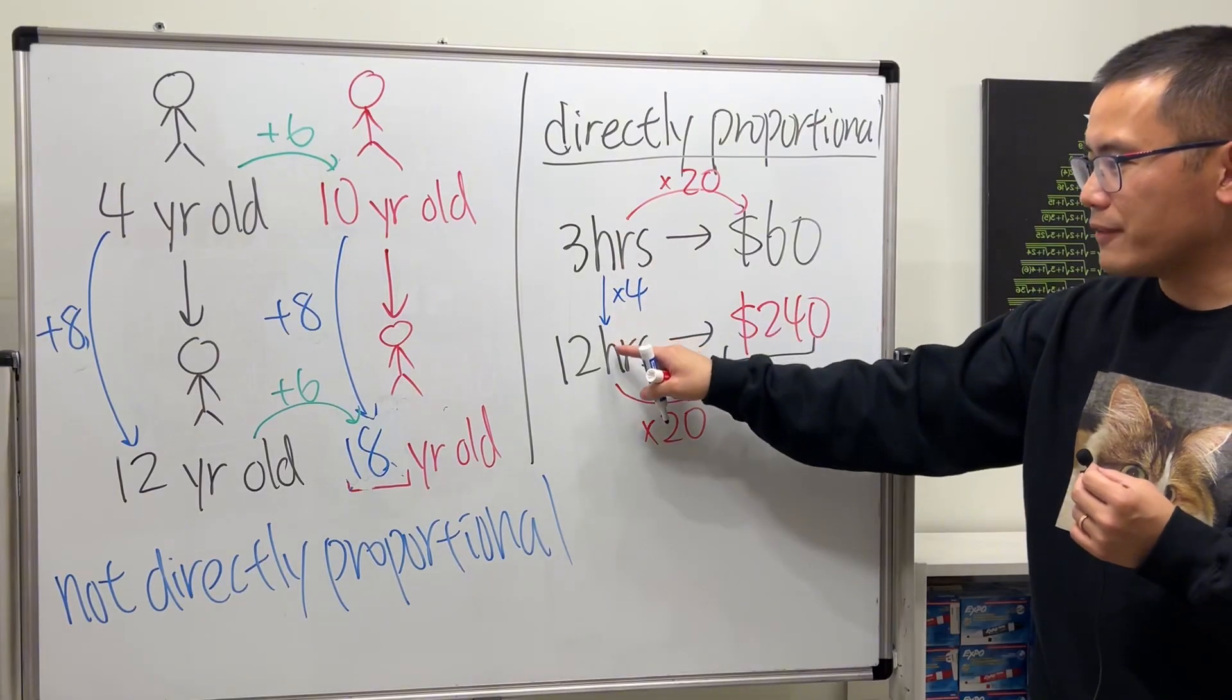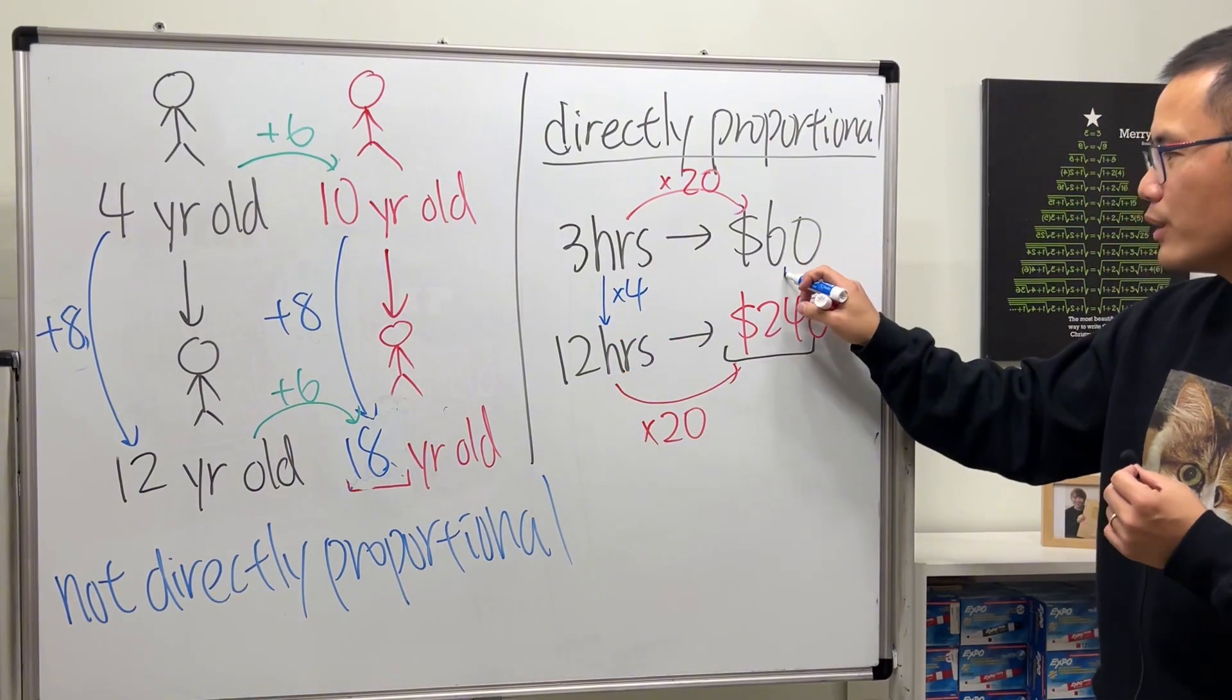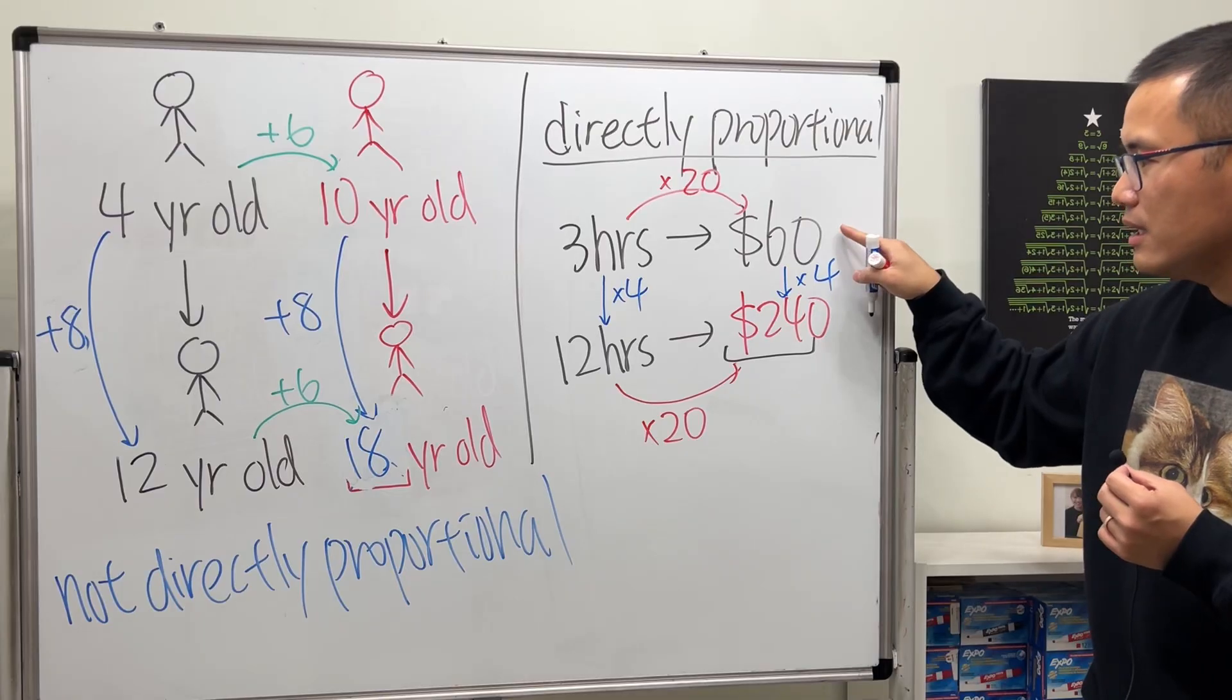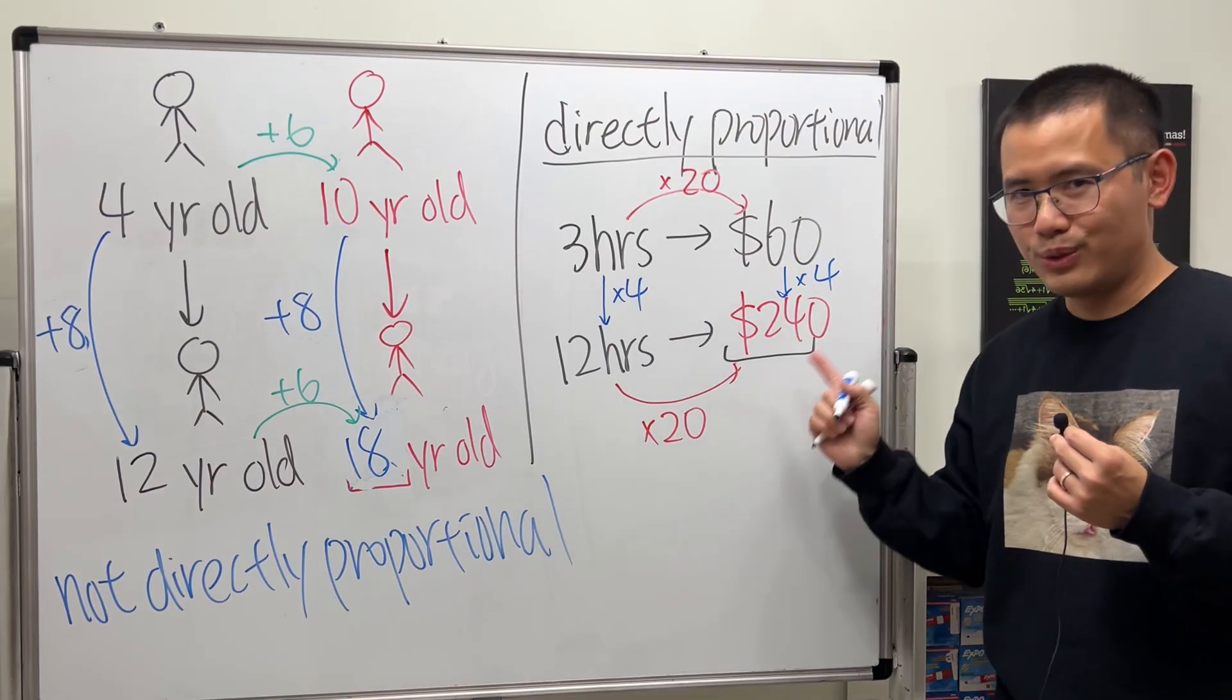If you multiply this by four you get 12, and in fact we can do the same thing: 60 multiplied by 4, you also get 240.